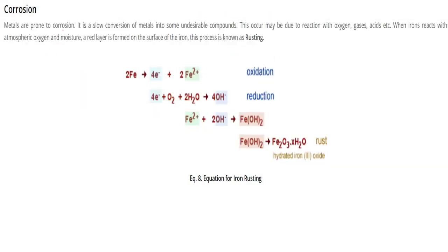Corrosion: Metals are prone to corrosion. It is a very slow conversion of metals into some undesirable compounds. Why are these undesirable? Because of corrosion, the metal will not be useful for us. This happens because the metal is exposed to oxygen, gases, and other acids where reactions take place.